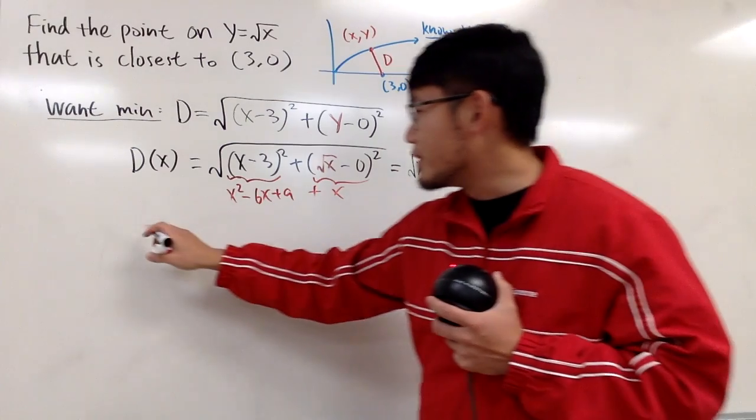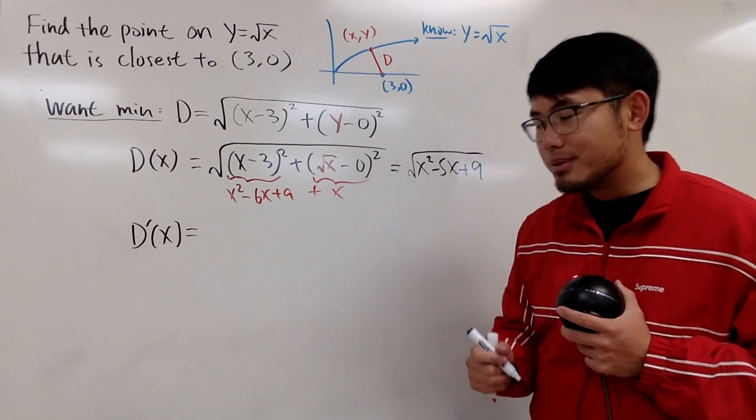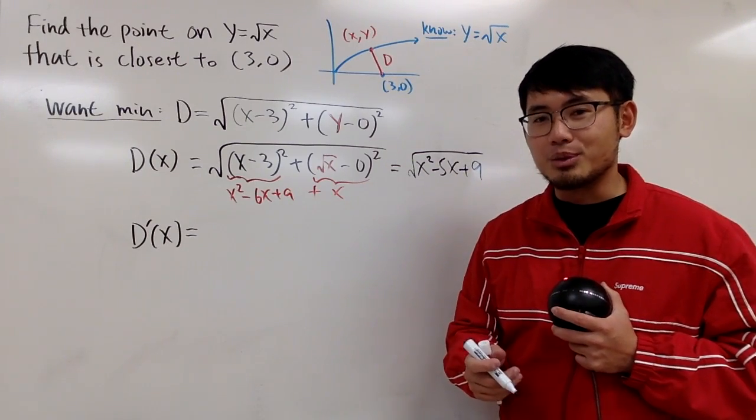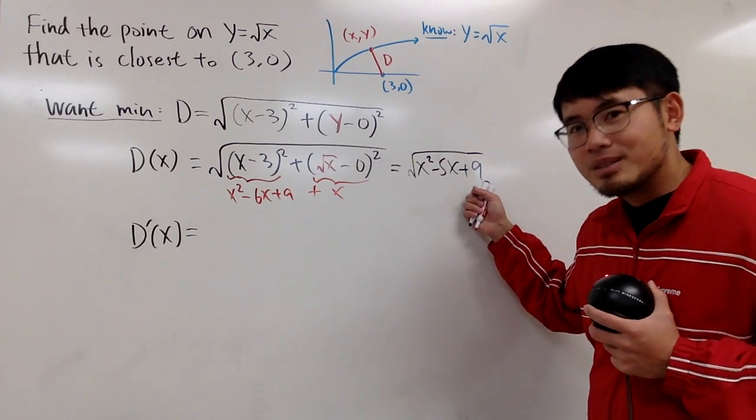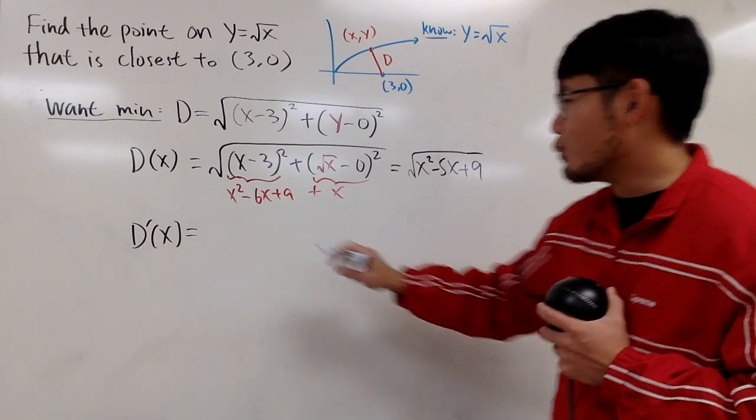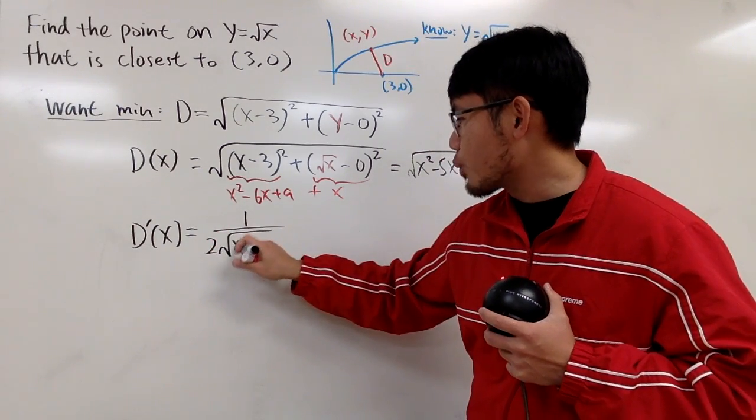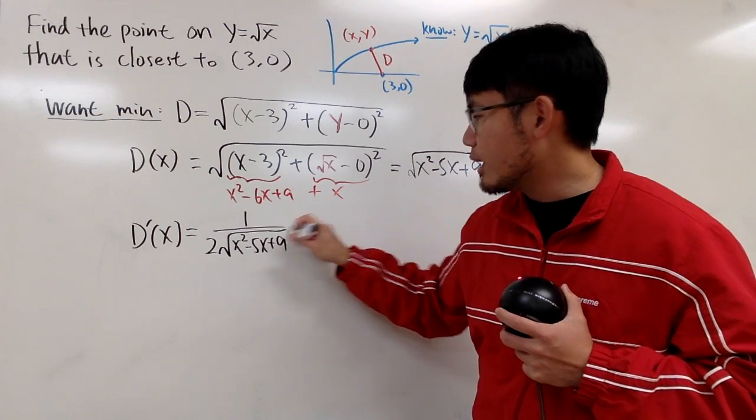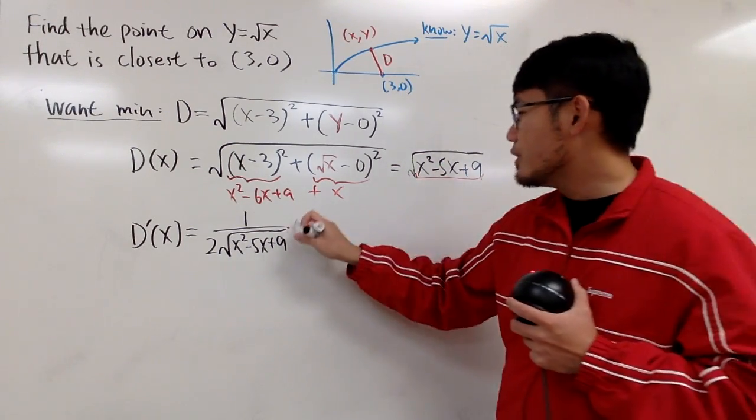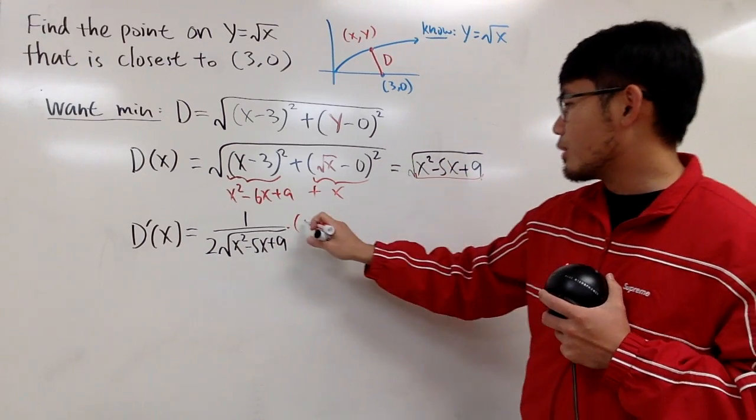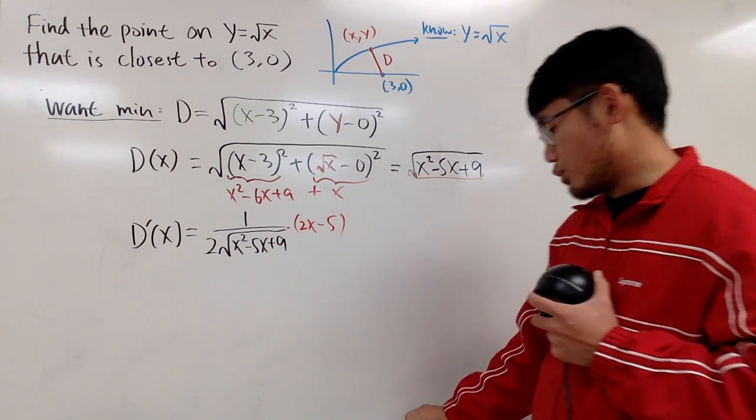And now let's do the derivative, d prime of x. Don't forget how you do your derivative, even though we have a lot of practice already, but derivative will be with you forever. Derivative of square root of something, first you do 1 over that, with a 2 in front. So 2 square root of x squared minus 5x plus 9. And then what do we need? Yes, the chain rule. You multiply by the derivative inside, which is this right here, which will give us 2x, and this right here will give us minus 5 like that. So here is our derivative.